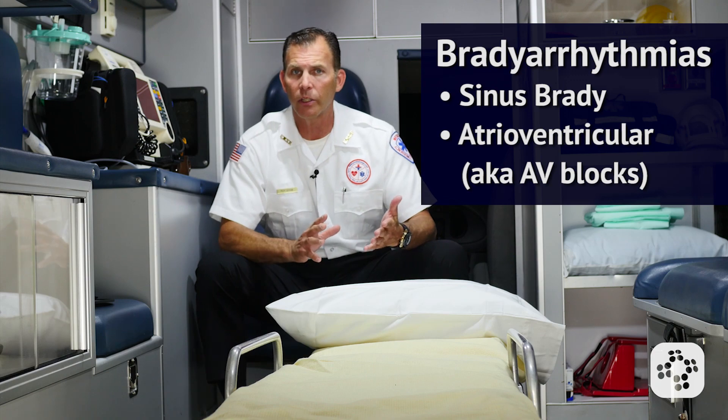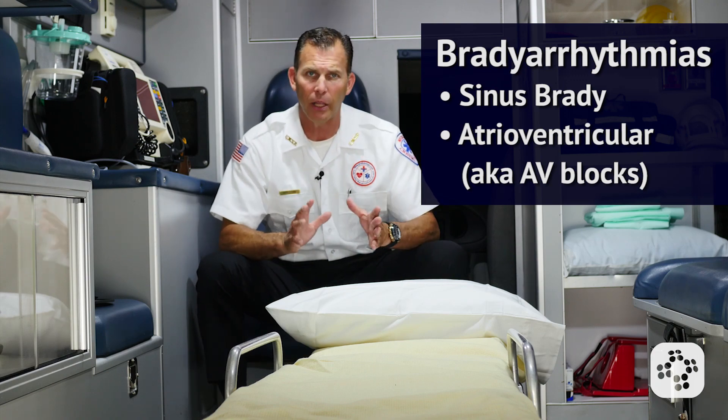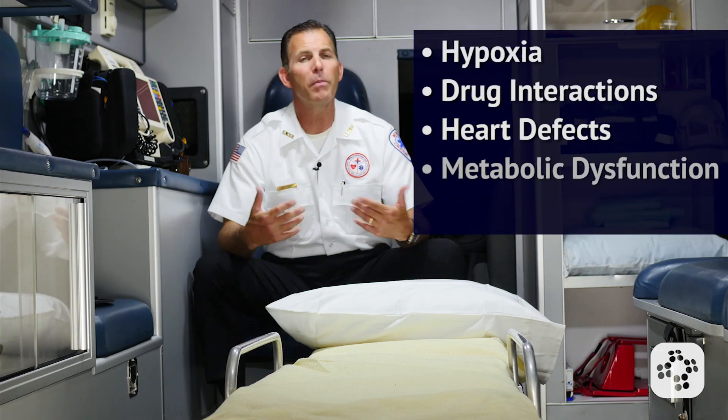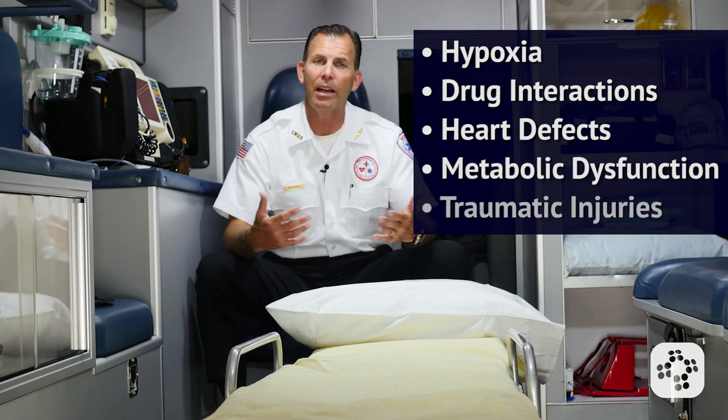The two most common types of bradyarrhythmias in children are sinus brady and atrial ventricular, otherwise known as AV blocks. Possible underlying causes of bradycardia include hypoxia, drug interactions, heart defects, metabolic dysfunction, and traumatic injuries.